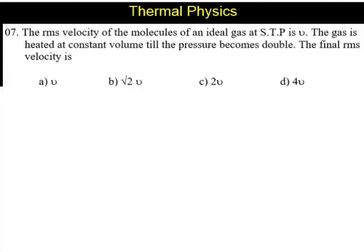Question number 7. The RMS velocity of the molecules of an ideal gas at STP is v. The gas is heated at constant volume till the pressure becomes double. The final RMS velocity is: a) v, b) √2v, c) 2v, and d) 4v.